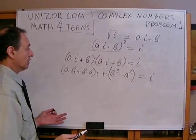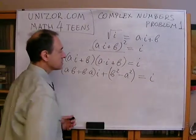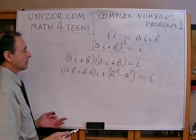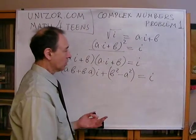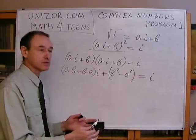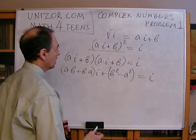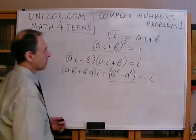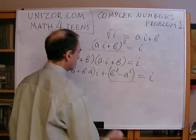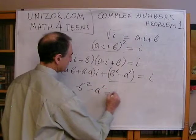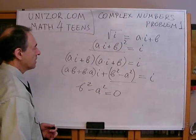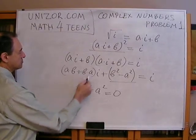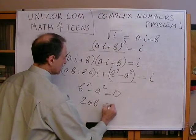Now we have an equation with two different variables among the complex numbers. If a complex number equals another complex number, then the real part must equal the real part and the imaginary part must equal the imaginary part. So from one equation we actually get two different equations. For the real part: b squared minus a squared equals zero. For the imaginary part: ab plus ba, which is 2ab, equals one.